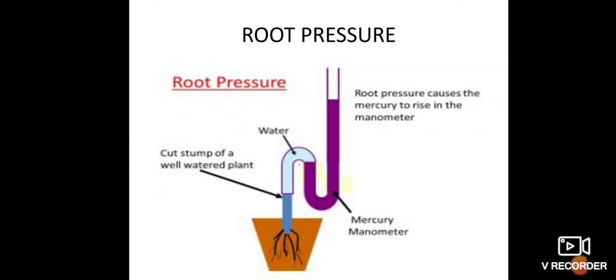Root pressure. Mineral ions from the soil are actively transported into xylem tissue of the root. Water moves along and increases the pressure inside the xylem. This pressure is called root pressure and is responsible for pushing water upward to some extent.